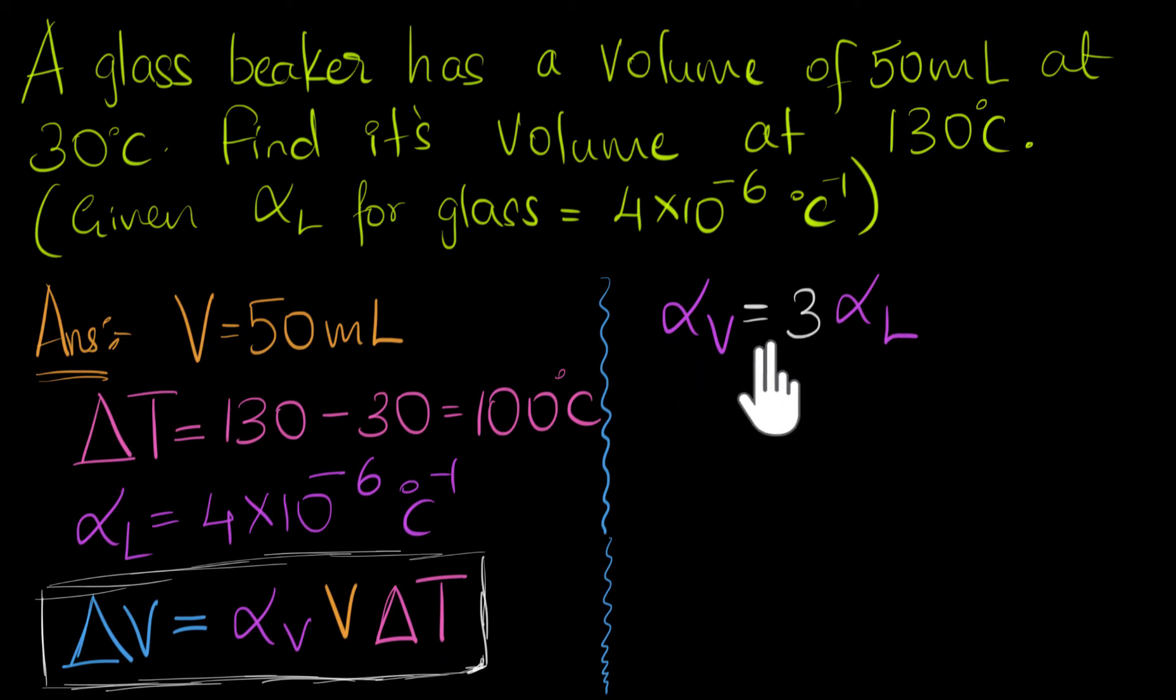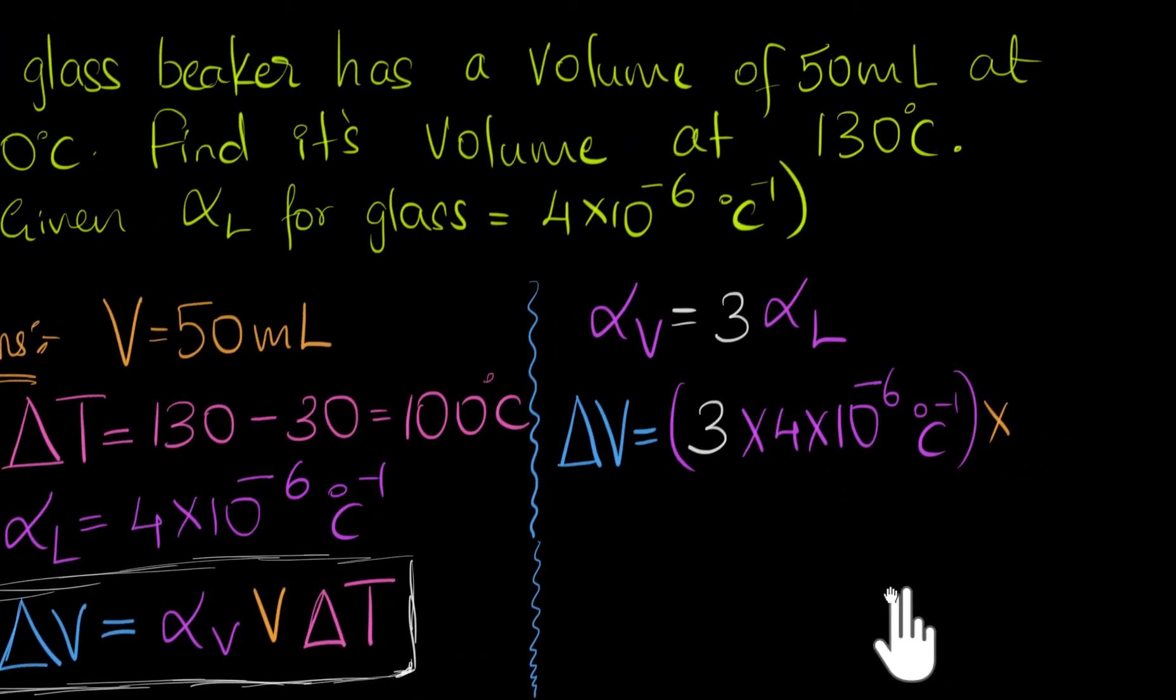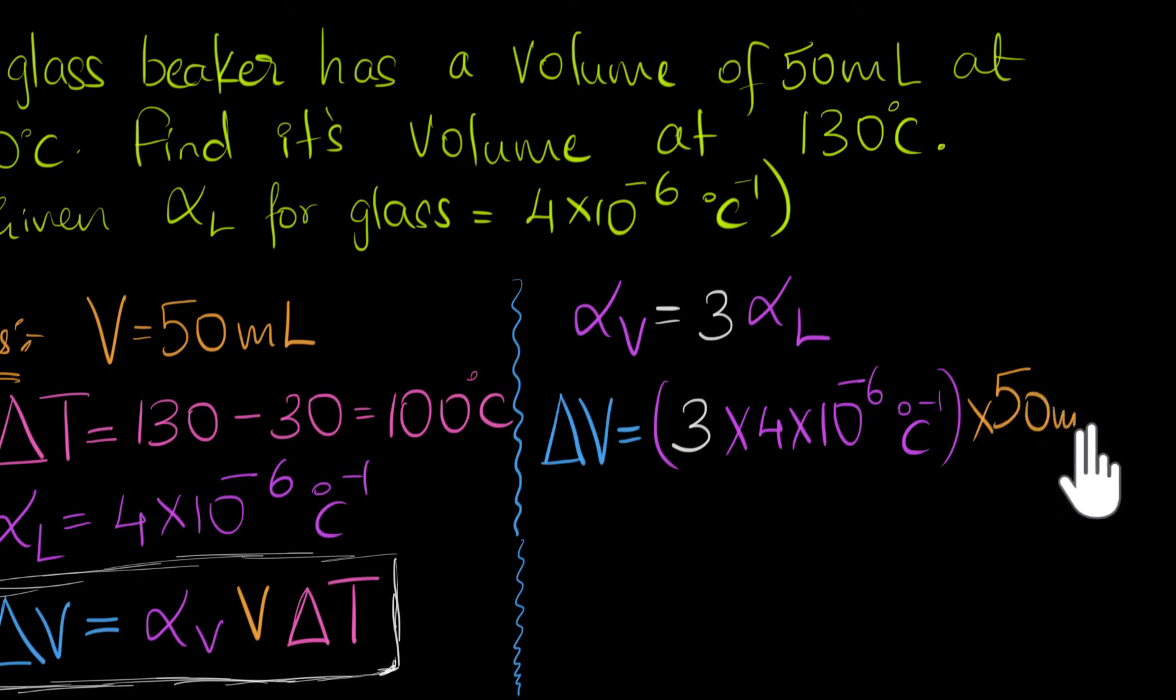But anyways, now since we know this, we can just substitute and calculate. So delta V is going to be alpha V, which is just 3 times alpha L. And alpha L is given to us. That is 4 times 10 to the minus 6 per degree Celsius inverse, times the original volume, that is 50 ml.